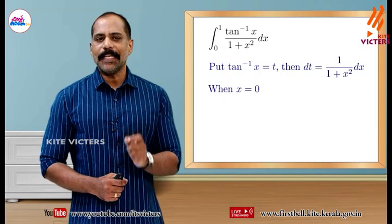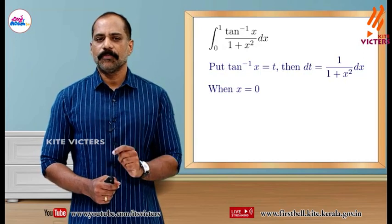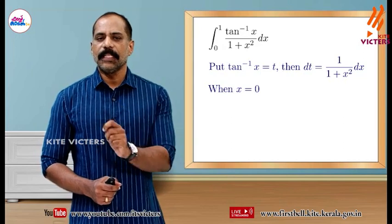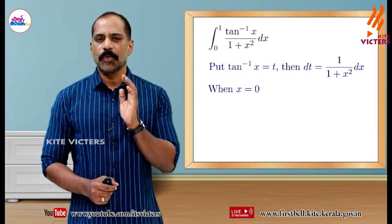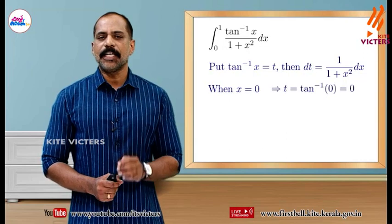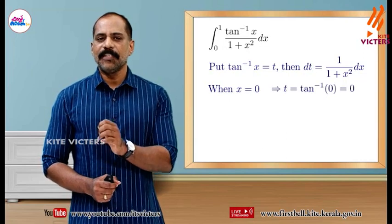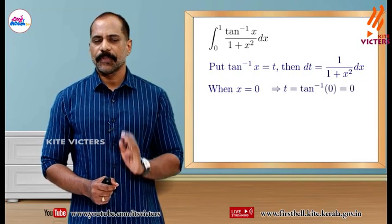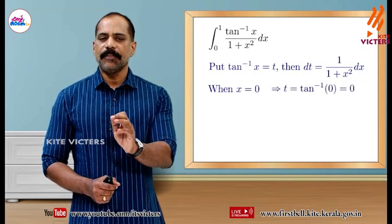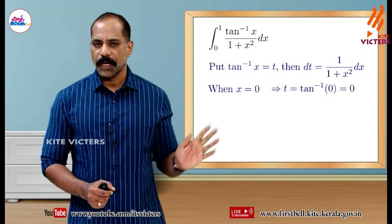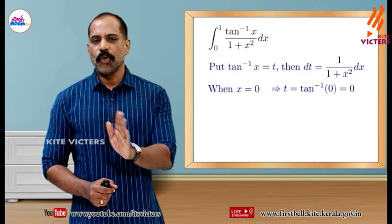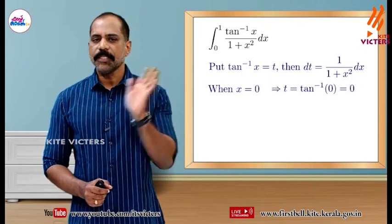Let tan inverse x equal to t. Then dt equals 1 by 1 plus x squared into dx. When x equals 0, t equals tan inverse 0, which is 0. So the lower limit is 0.